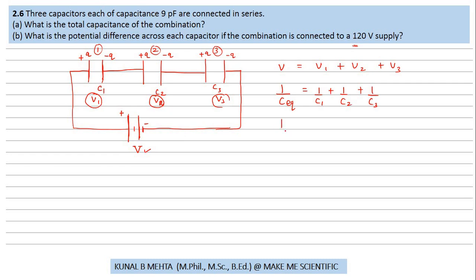Now, this is 1 upon C equivalent and we do know that this is equal to 1 upon 9 picofarad, 1 upon 9 picofarad, again 1 upon 9 picofarad. So this turns out to be 3 by 9 picofarad.